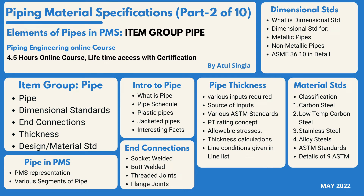Piping material specification is one of the most important deliverables from the piping discipline. This is the second part of this course. In the first part, we discussed what PMS is, the various items in PMS in detail, and looked into the various elements covered in any pipe class, as well as the various inputs required — especially the fluid list — in each and every aspect to set the foundation for this deliverable.